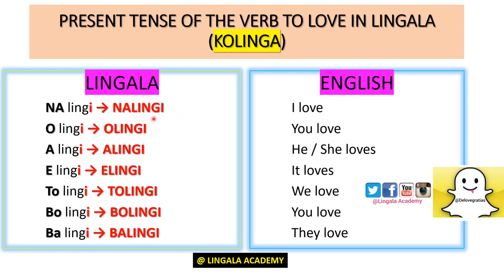The conjugation of 'kolinga' also applies for 'to love': 'Nalingi' means I love. 'Olingi' means you love. 'Alingi' means he or she loves. 'Elingi' means it loves. 'Tolingi' means we love. 'Bolingi' means you love. 'Balingi' means they love. For example, 'nalingi yo' means I love you.